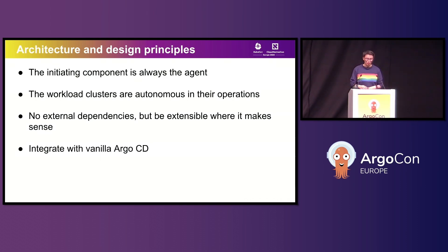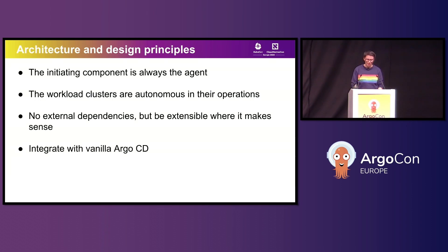Thirdly, there are no external dependencies by default. The core idea is to make it simple to set up and get started. Out of the box there are no requirements for persistent storage, any third-party authentication systems, database systems, or message routers. Users and developers should be able to get started using vanilla Kubernetes clusters. We do acknowledge this might not be enough, especially for large-scale setups, which is why we've added extension points at strategic parts of the architecture so that you can integrate with those third-party systems if needed.